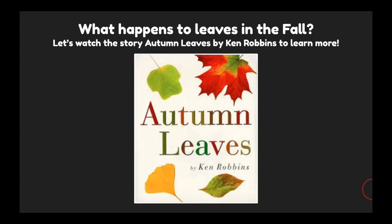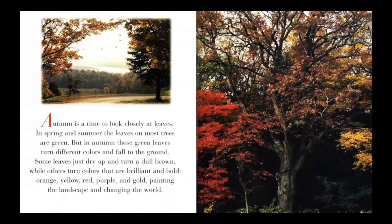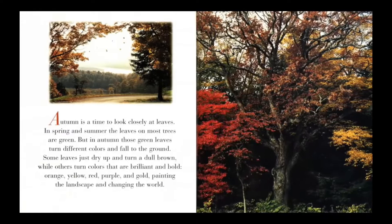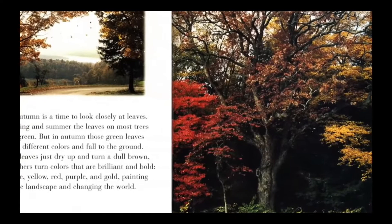Autumn is a time to look closely at leaves. In spring and summer, the leaves on most trees are green, but in autumn those green leaves turn different colors and fall to the ground. Some leaves just dry up and turn a dull brown, while others turn colors that are brilliant and bold — orange, yellow, red, purple, and gold — painting the landscape and changing the world.